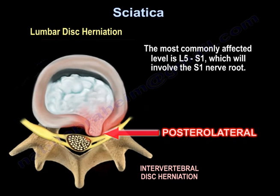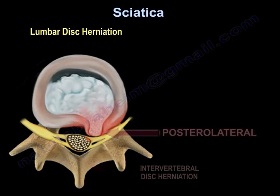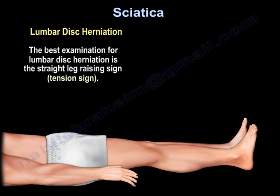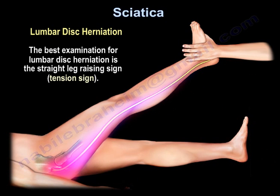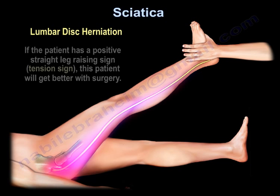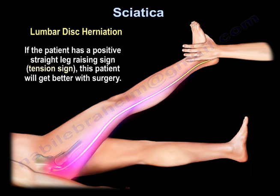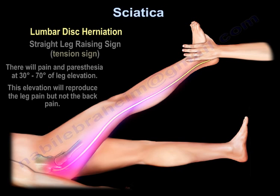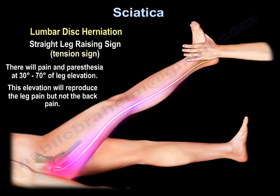The most commonly affected level is L5-S1, which involves the S1 nerve root. The best examination for lumbar disc herniation is the straight leg raising sign — the tension sign. If the patient has a positive tension sign, the patient will benefit from surgery. There will be pain and paresthesia at 30 to 70 degrees of leg elevation, reproducing the leg pain but not the back pain.